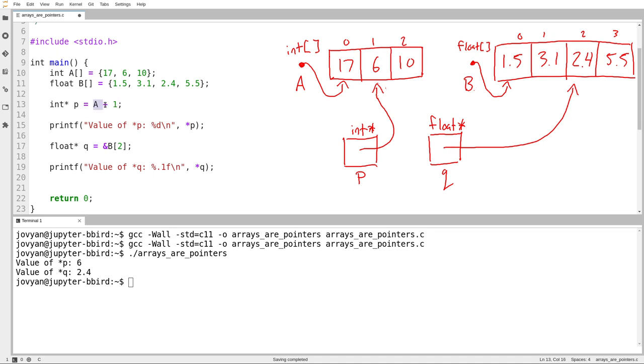So what I could do is I could say int star P equals A plus 1. Because A, the name A, behaves just like a pointer to the first element of the array. So now P contains an arrow pointing at A sub 1, just like what I had before, but without the use of the square brackets. And then Q would be B plus 2.